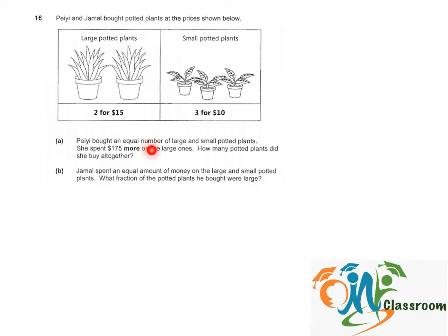Pei bought an equal number of large and small potted plants. She spent $175 more on the large ones. How many potted plants did she buy altogether? The key word here is she bought an equal number of large and small potted plants.